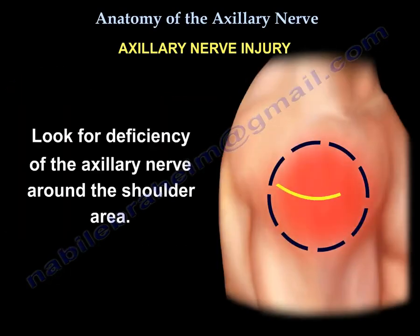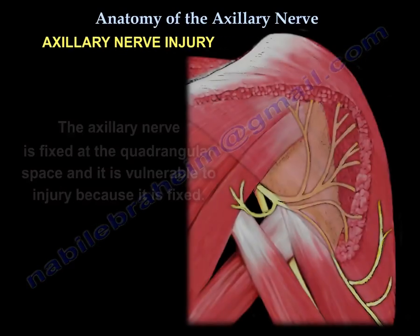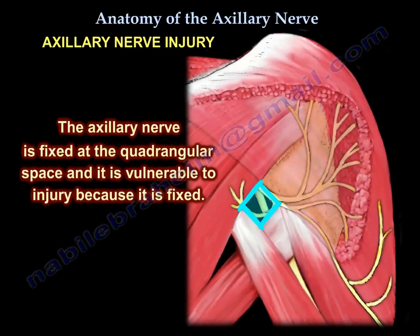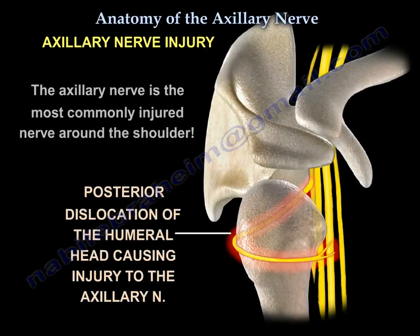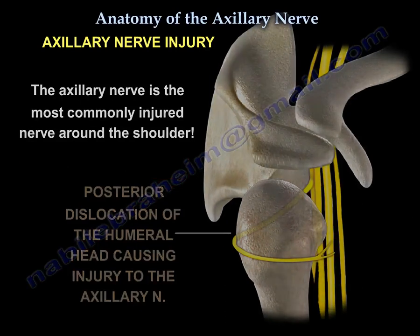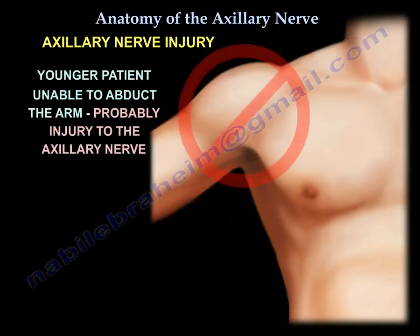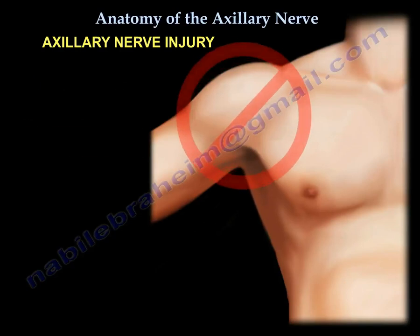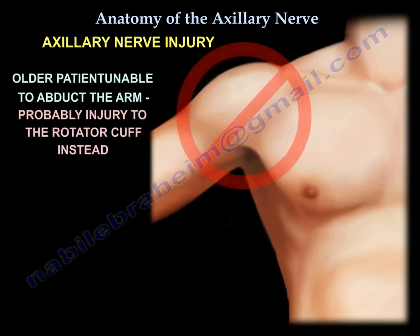Also try to look for deficiency in sensation around the shoulder area. The axillary nerve is fixed at the quadrangular space and is vulnerable to injury because it is fixed. It is the most commonly injured nerve around the shoulder, usually from trauma such as fracture or dislocation. If you have a young patient unable to abduct the shoulder after an injury, it's probably an axillary nerve injury. But if it is an older patient, it's probably a rotator cuff tear and not necessarily an axillary nerve injury.